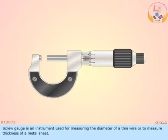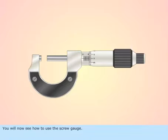Screw gauge is an instrument used for measuring the diameter of a thin wire or to measure thickness of a metal sheet. You will now see how to use the screw gauge.